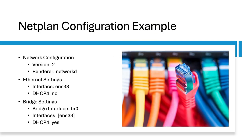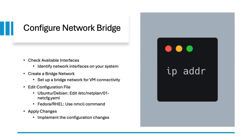Here's an example of a Netplan configuration. It includes network settings with version 2 and renderer as networkd, Ethernet settings for interface ens33 with DHCP4 disabled, and bridge settings for br0 with DHCP4 enabled. To configure a network bridge for your virtual machines, first check for available interfaces, then create a bridge network, edit the configuration file based on your operating system, and finally apply the changes.